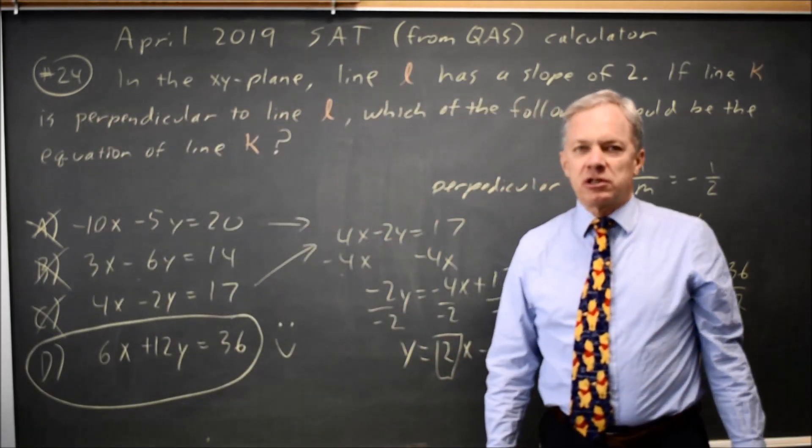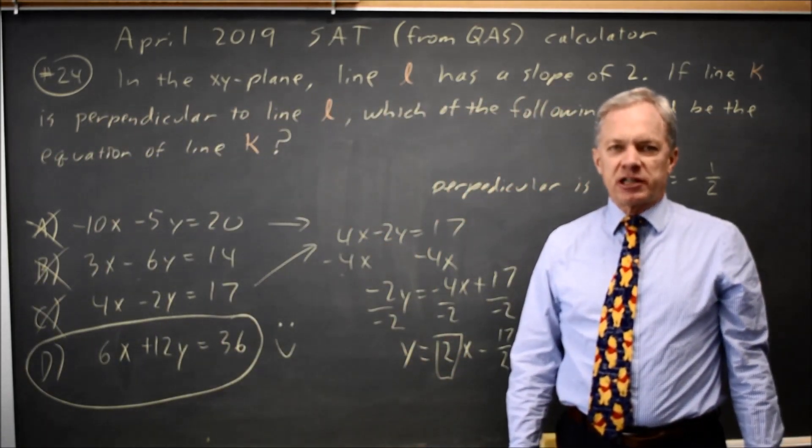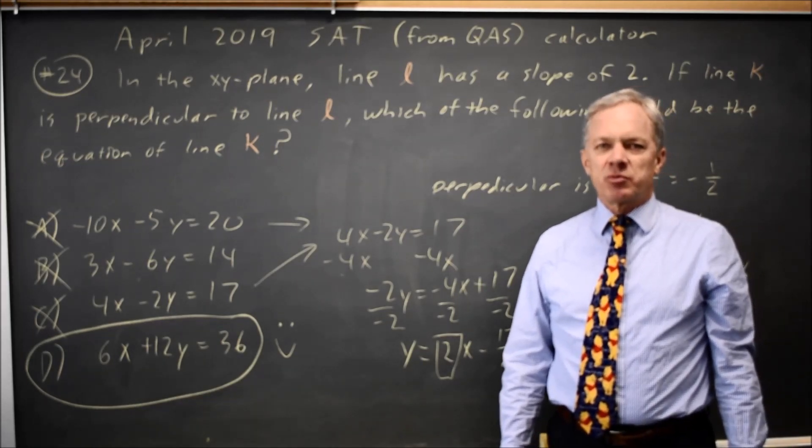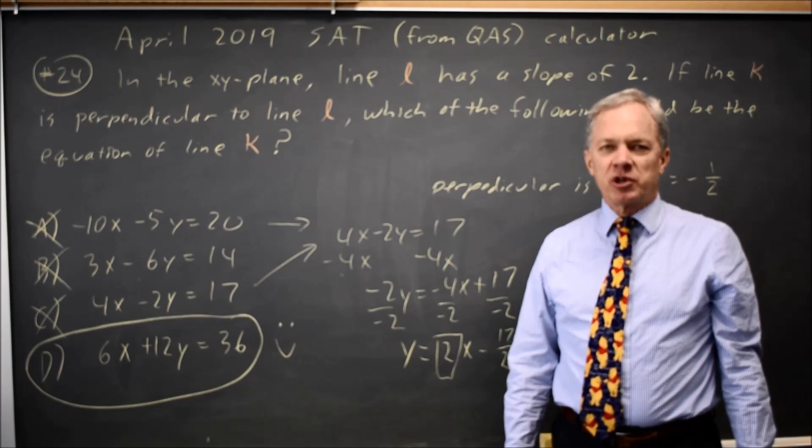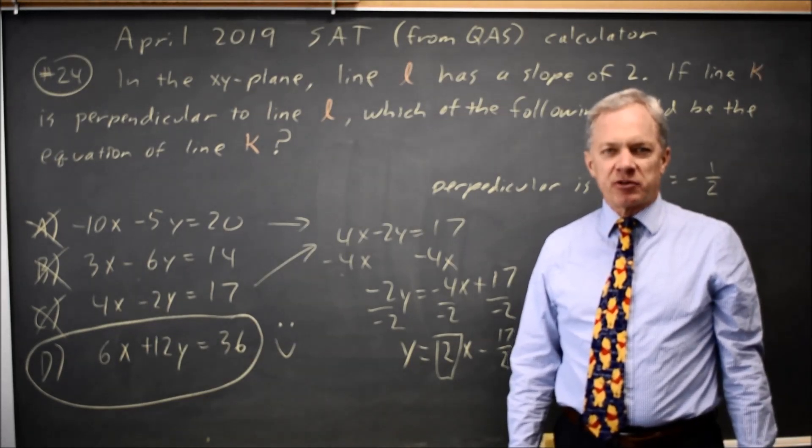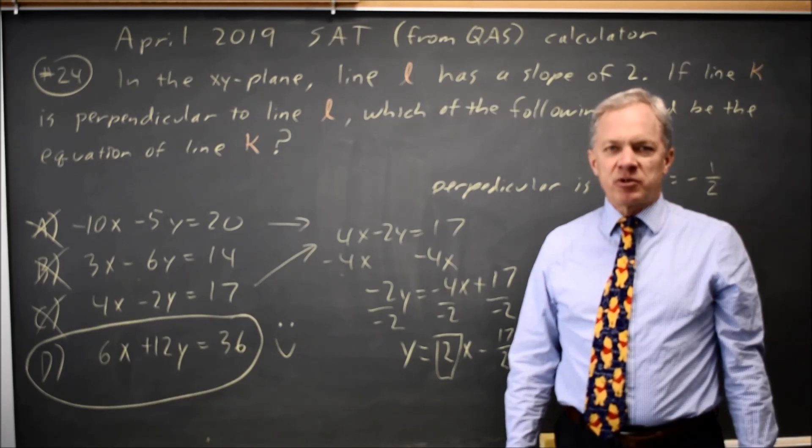College Board does not always ask about perpendicular lines, but they have asked it multiple times. You need to remember that for perpendicular lines, the slope of one is negative 1 over the slope of the other, or that the product of the two slopes is negative 1. Come back soon for my next math video.